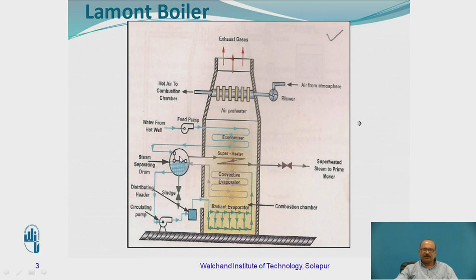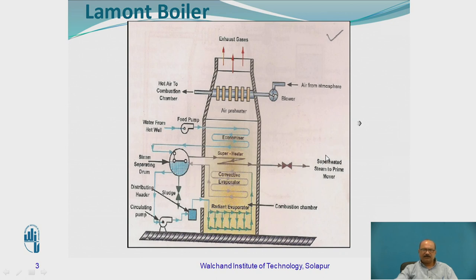Here the separation of steam is going to take place. This separated steam comes to the superheating stage. Water is available in the drum, but only the steam is going to be passing through the superheating stage — removing any final particles of water if present in the pipeline. The superheated steam is then supplied to the turbine, which we call the prime mover.